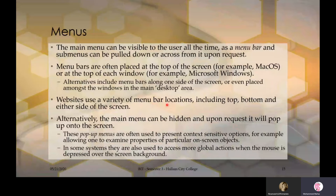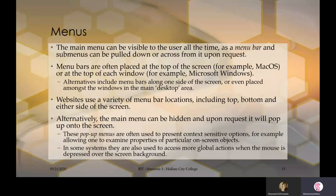Websites use a variety of menu bar locations including top, bottom, and either side of the screen. Today's websites show menus on the top or on the side — you can expand them. Alternatively, the main menu can be hidden and upon request it pops up onto the screen. These pop-up menus are often used to present context-sensitive options, for example examining properties of particular on-screen objects. Pop-up menus appear on demand — when you click a button, a menu appears on that spot.